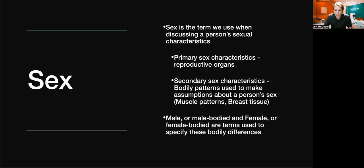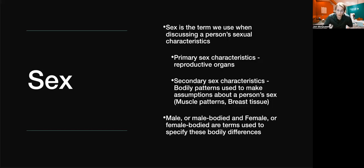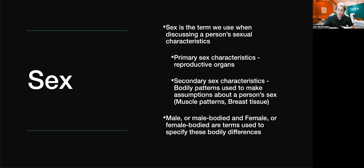Starting with this, let's talk about the idea of what is sex. As we look at the understanding of sex and gender, it is important to separate that which is socially constructed from that which is used for classification. Sex within sociology is broken down into two primary understandings: primary sex characteristics and secondary sex characteristics, as you can see on the slide.